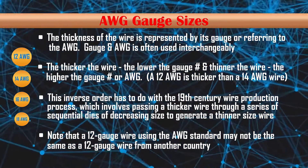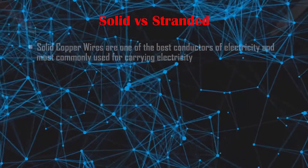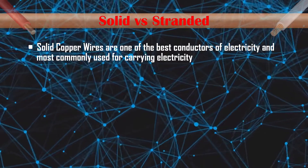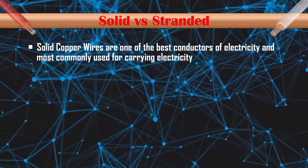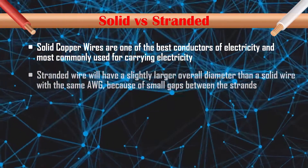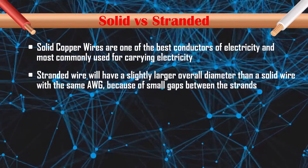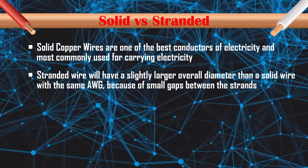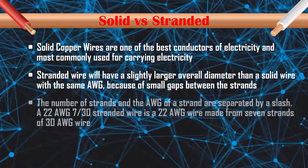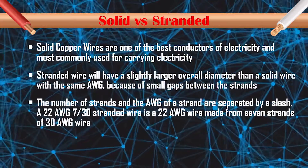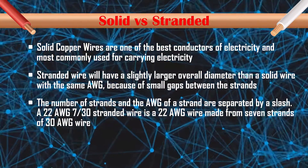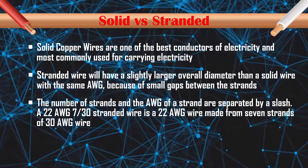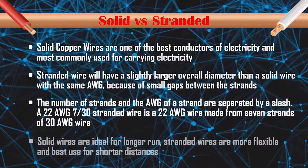Solid copper wires are one of the best conductors of electricity and most commonly used for carrying electricity. A more flexible stranded wire will have a slightly larger overall diameter than a solid wire with the same AWG, because of small gaps between the strands. The number of strands and the gauge of a strand are separated by a slash. For example, a 22 AWG 7/30 stranded wire is a 22 gauge wire made from seven strands of 30 gauge wire.